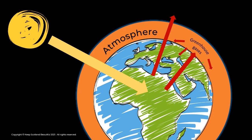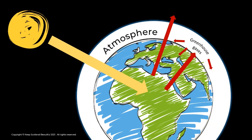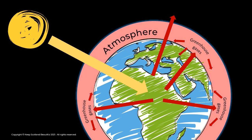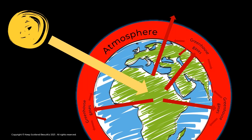However, since the industrial revolution, human activity — especially the burning of huge quantities of fossil fuels — has released lots more greenhouse gases into the atmosphere. This means that more heat from the Sun is reflected back to earth, leading to the overall temperature of the planet increasing. This leads to long-term shifts in our weather patterns and changes like melting polar ice that we call climate change.